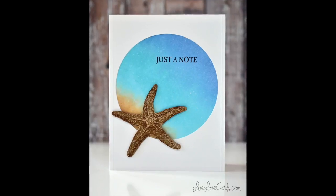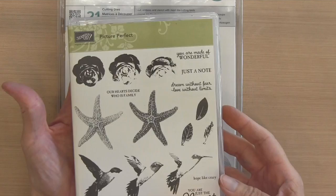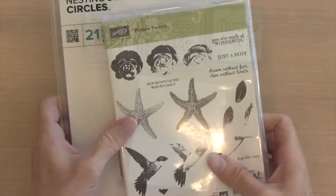Hi everyone, it's Darlene. Welcome back for another card video. Today I have a realistic-looking starfish from the Stampin' Up Picture Perfect set, along with my giant set of nested circles by We Are Memory Keepers.